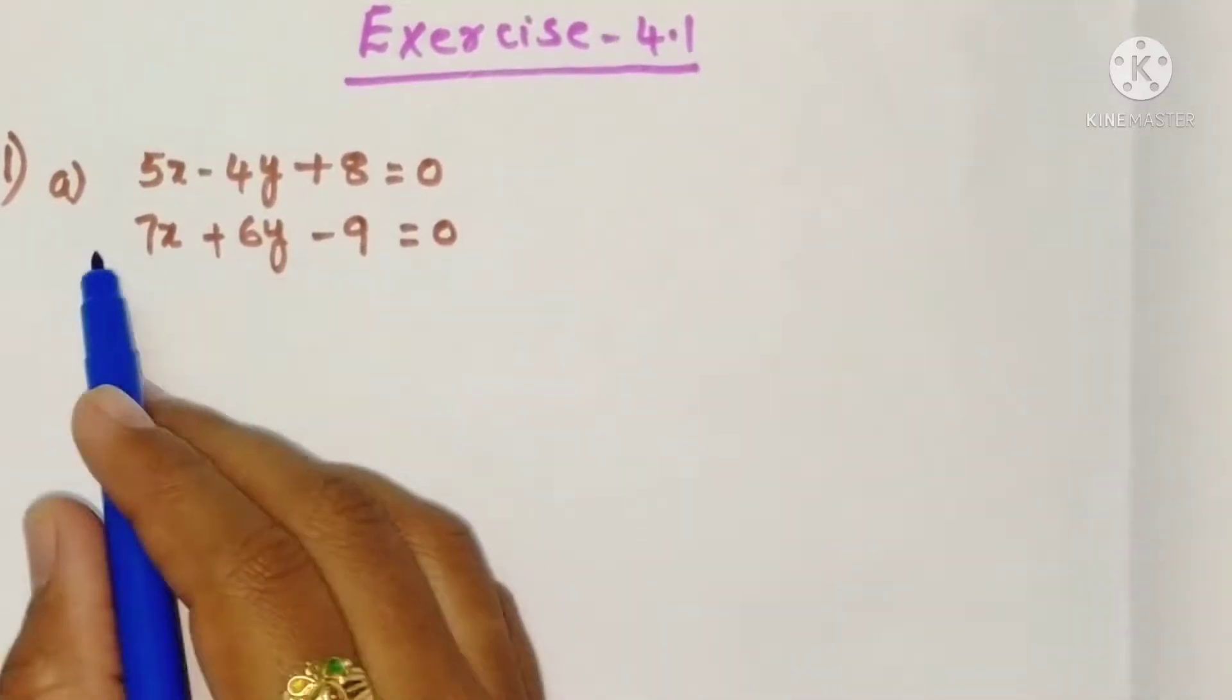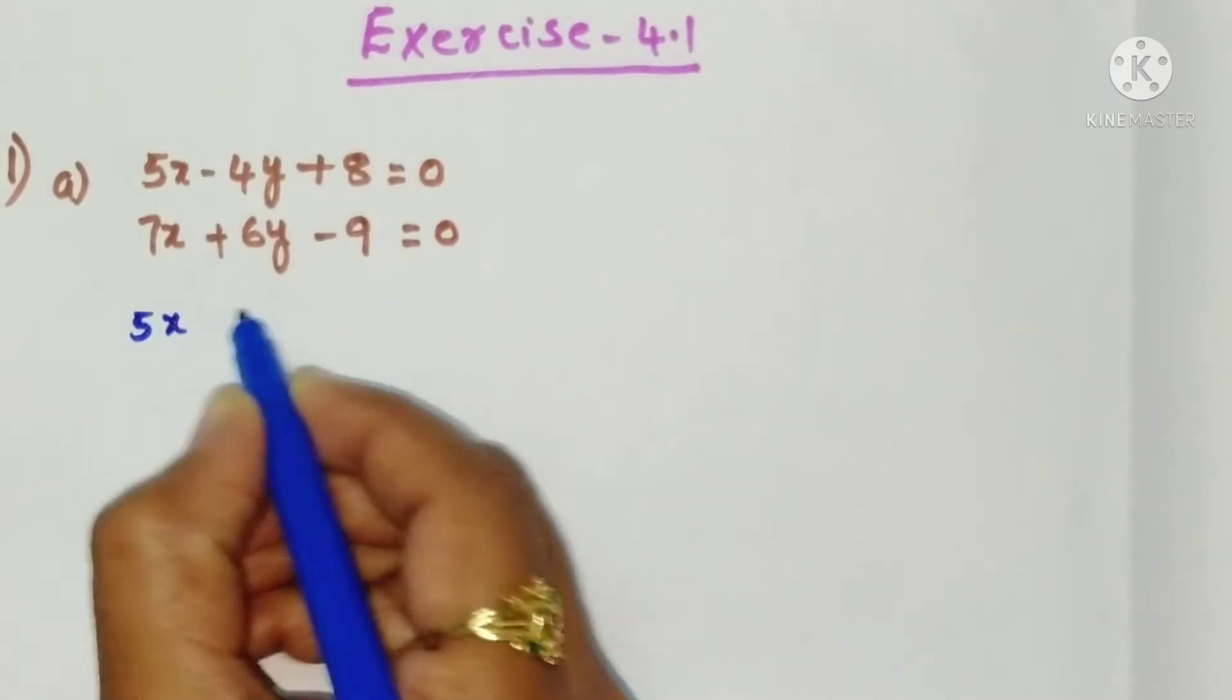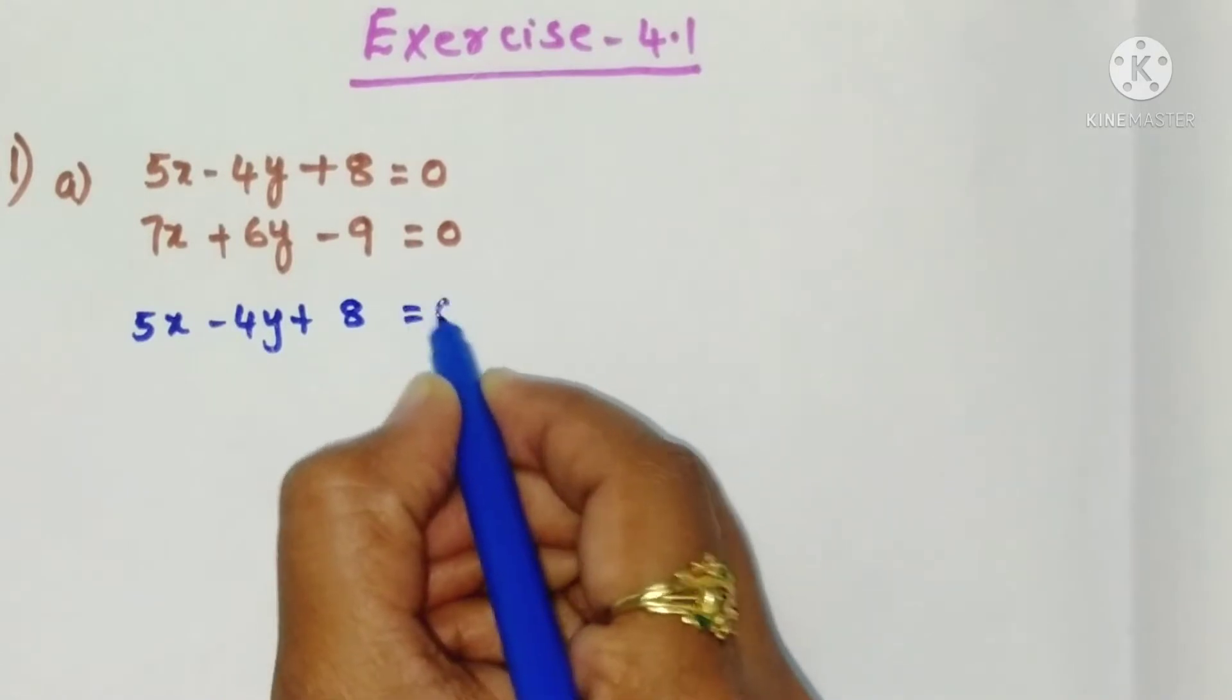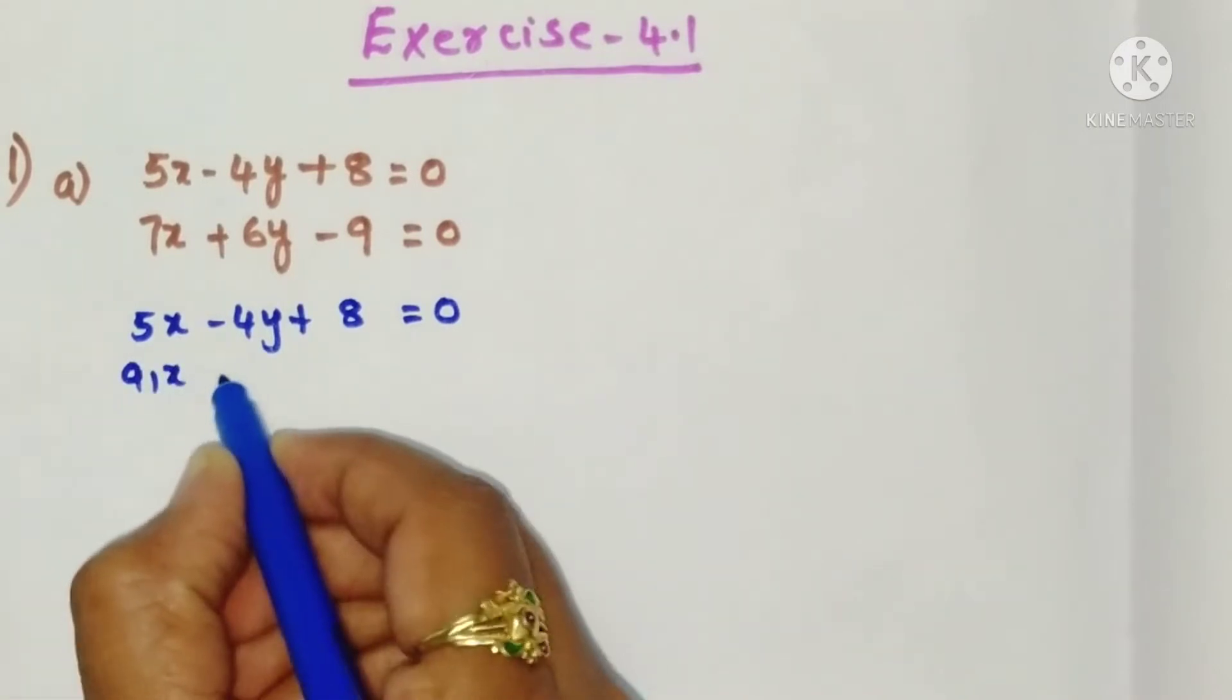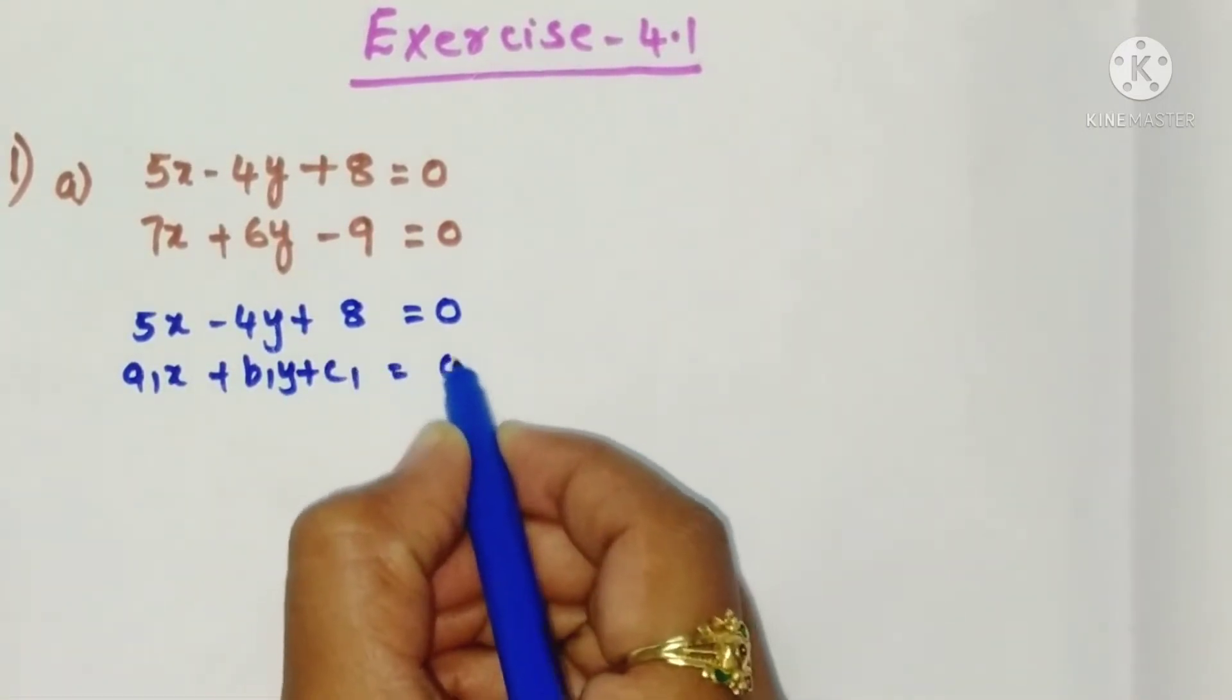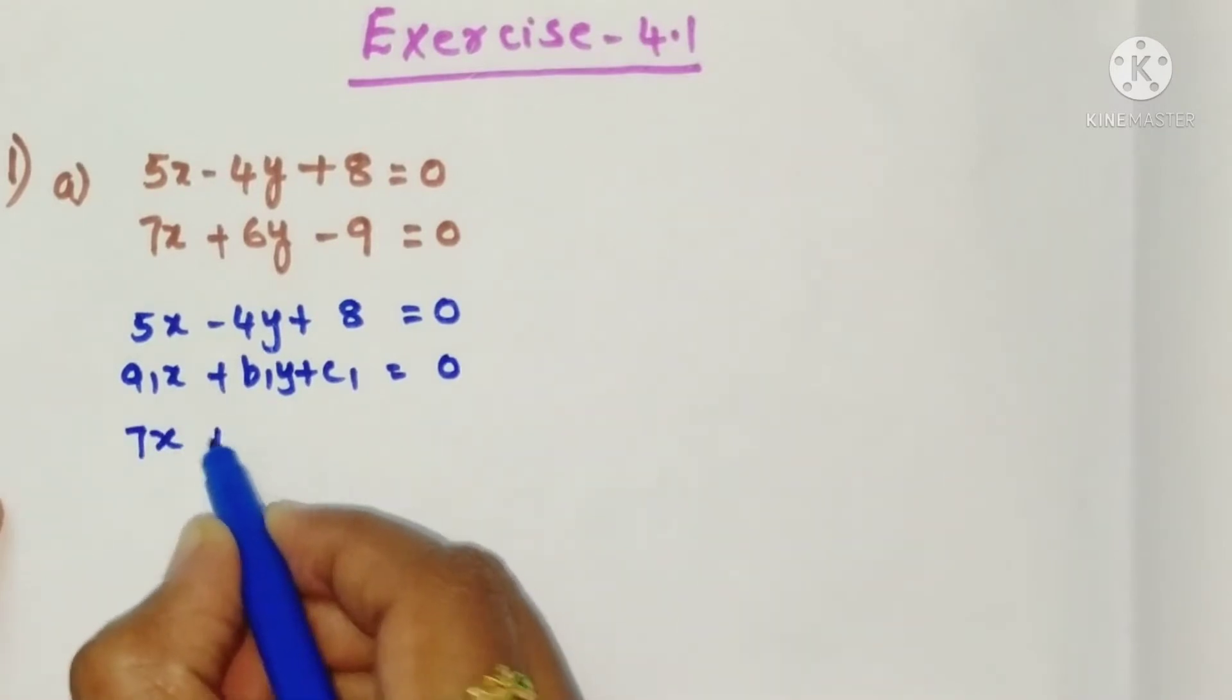So just this is the given problem. Write first equation: 5x minus 4y plus 8 equals 0. Just compare this with a1x plus b1y plus c1 equals 0. Similarly write second equation: 7x plus 6y minus 9 equals 0.